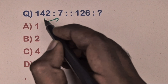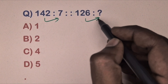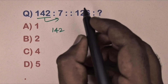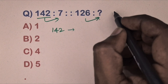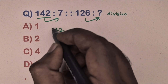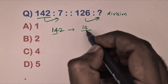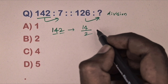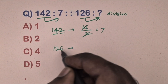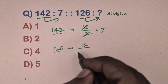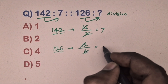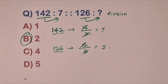Next question: 142 is related to seven, 126 is related to which number. Options are given. This is the division method — take 142, divide first and second digit by the third number to get seven. Same way for 126, divide first and second by third to get two. Option B is the correct answer.